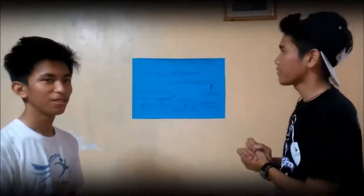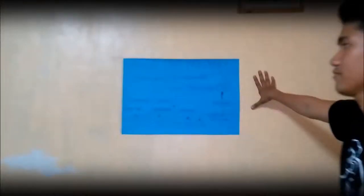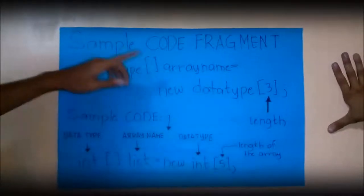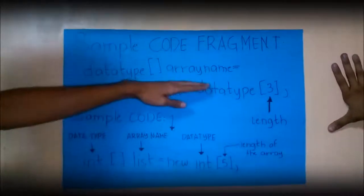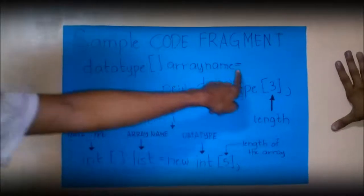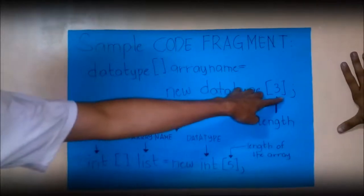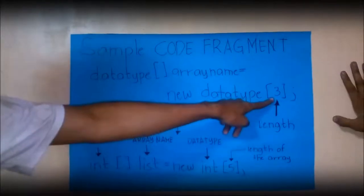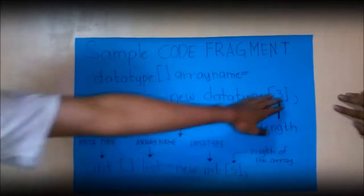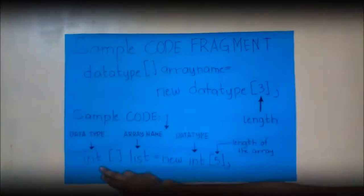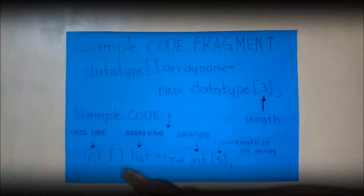First, data type, open and close bracket, array name. Then put an equal sign. Then new data type, open and close bracket. Then the array length. Then semicolon. Here is the sample code: int is your data type, open and close bracket, list is your array name, equals new int, open and close bracket, and 5, which is the length of your array. Always don't forget to put a semicolon to end the statement.